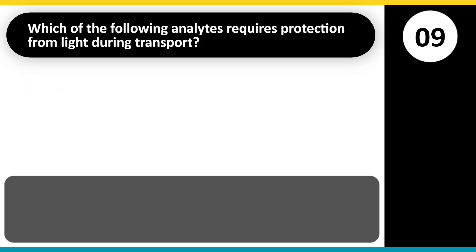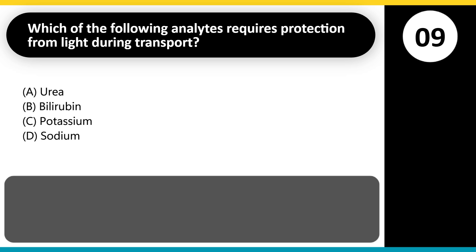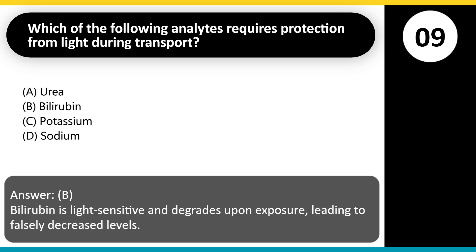Which of the following analytes requires protection from light during transport? A. Urea. B. Bilirubin. C. Potassium. D. Sodium. Answer: B. Bilirubin is light-sensitive and degrades upon exposure, leading to falsely decreased levels.